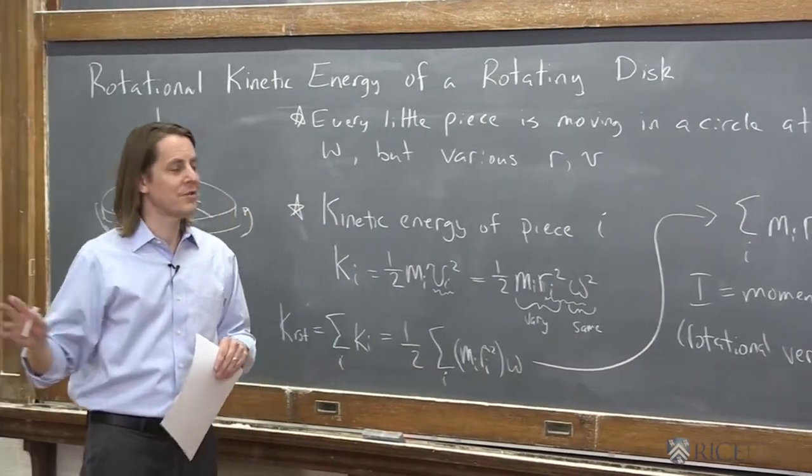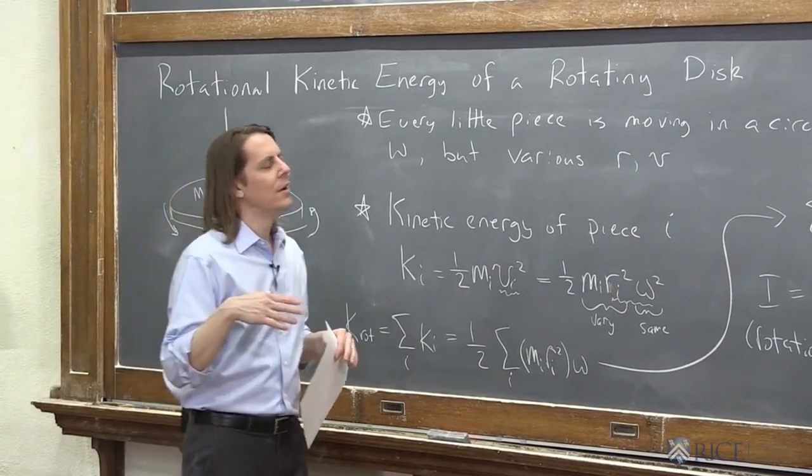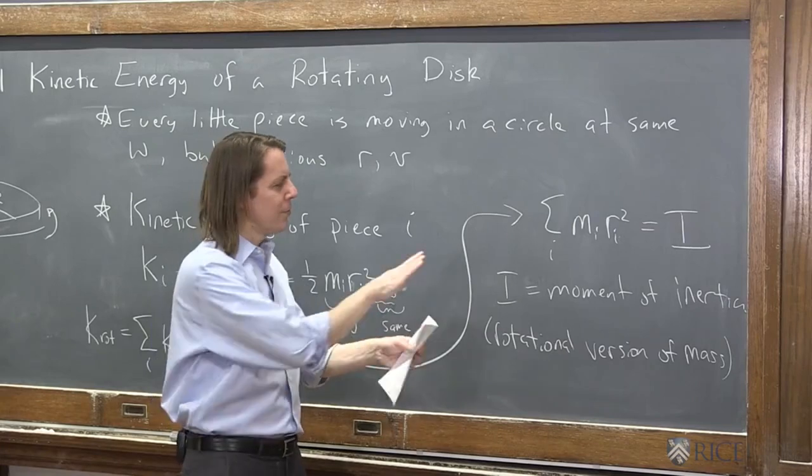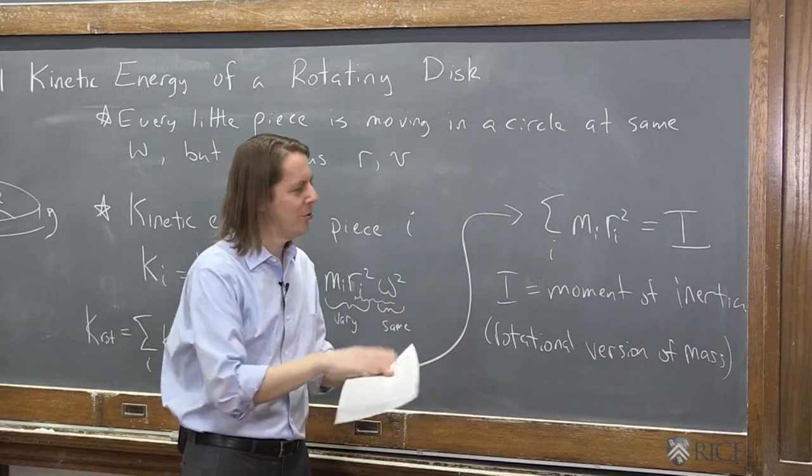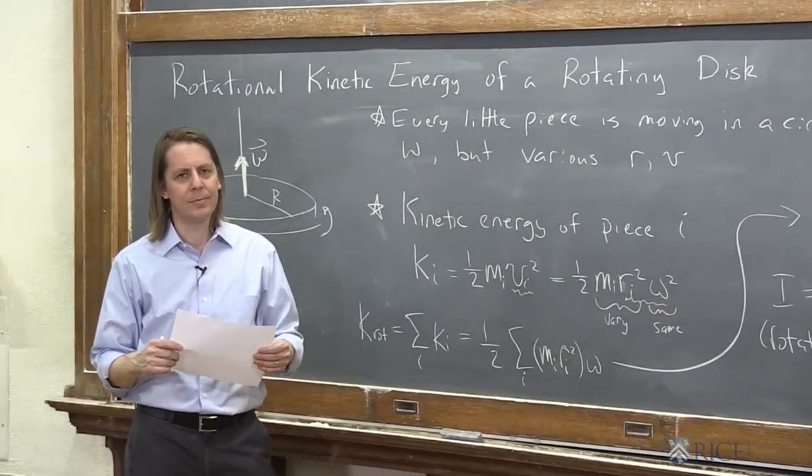This is the rotational version of mass. So there's no special energy, but there is a special quantity that we use in the place of mass when we do rotational calculations. And this is it, I. And if it's a little confusing, don't worry, because we're about to do mini lectures on it. But there's what happened. We thought about energy. We ended up with some new kind of mass.